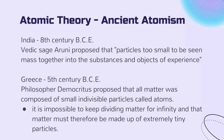Atomic theory dates back to ancient civilization. In India in the 8th century BCE, the Vedic sage Aruni proposed that particles too small to be seen mass together into the substances and objects of experience. In Greece in the 5th century BCE, the philosopher Democritus proposed that all matter was composed of small, indivisible particles called atoms. He said that it is impossible to keep dividing matter for infinity, and that matter must therefore be made up of extremely tiny particles.